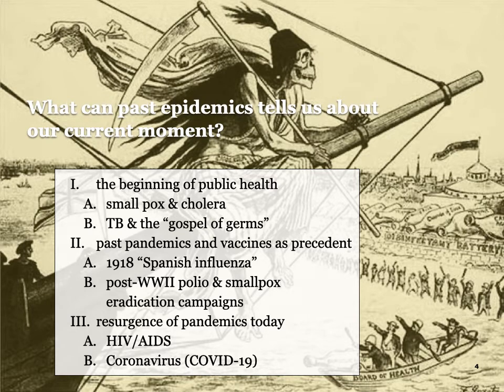There are broad questions about epidemics I'd like to explore today. What is the role of disease in history? How do natural disasters become social disasters? This disease was not created by people, but as it moves through our society, our behaviors shape the way it manifests. And last, what social and political responses have past societies had to epidemics, and how do those compare to our response today?